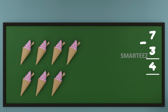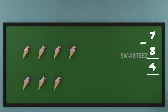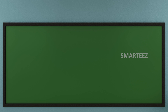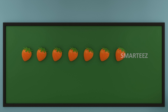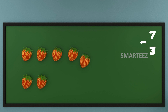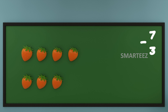Now, let's look at another yummy thing — a fruit, strawberry. Let's start with seven strawberries and subtract three strawberries out of them. That's seven strawberries in total. That's one, two, three, four, five, six, and seven — a total of seven strawberries. Let's subtract three strawberries out of it. That's one, two, and three strawberries. What we have left is one, two, three, and four strawberries.